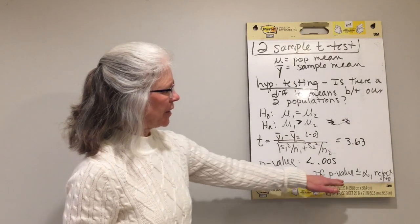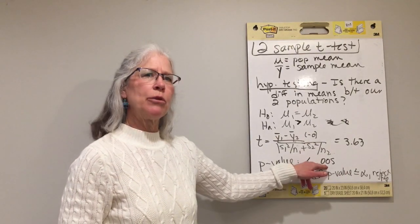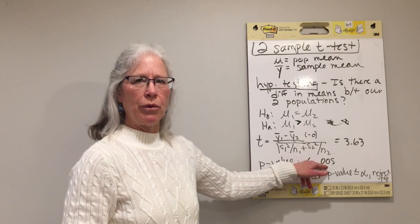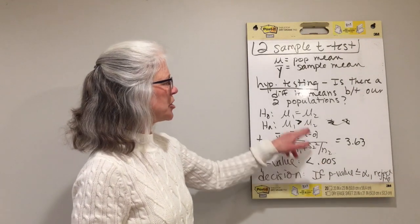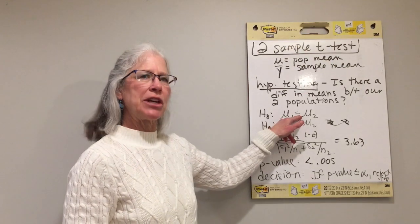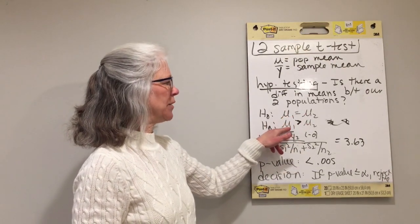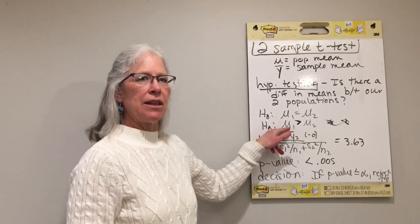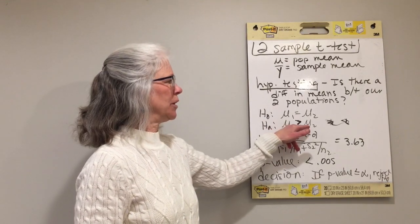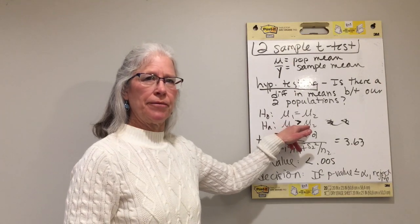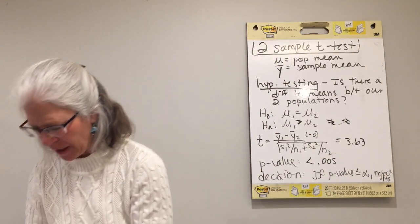Make a decision: if our p-value is less than or equal to alpha, we reject the null. No matter what alpha we pick — 0.01, 0.05, or 0.10 — our p-value is less than or equal to that. So we reject the null hypothesis that the average age is the same among non-survivors and survivors, and we believe the alternate: that the people who died are, on average, significantly older than the people who lived.